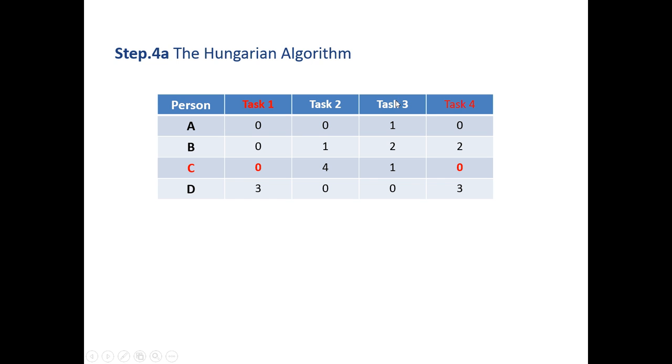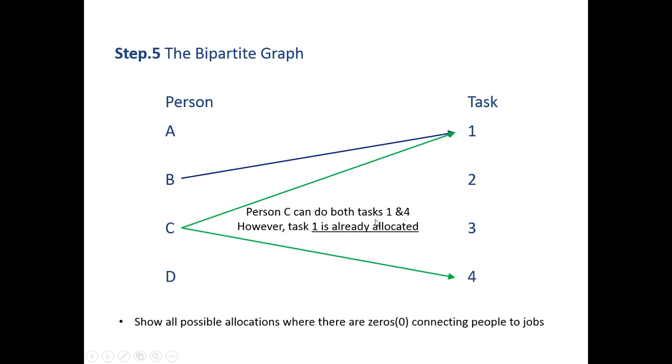Let's now look at person C. They can perform task 1 and task 4 as they have a 0 in both. However, we have already allocated task 1 to person B, and that leaves person C to complete task 4.